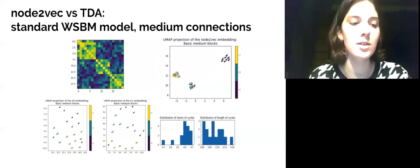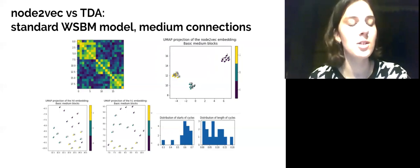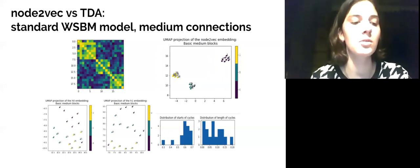In this case, cluster structure is not so clear in the node2vec case. For TDA embedding, distribution of cycle lengths and starts of the cycles differ from the cases with strongly connected blocks. Now, there are only two early period cycles. The members of these cycles correspond to the first and third block. From the network image, it is clear that they have a stronger connection between each other than with the second block.